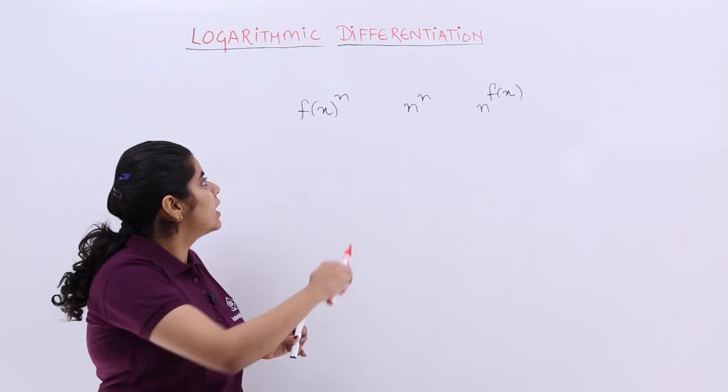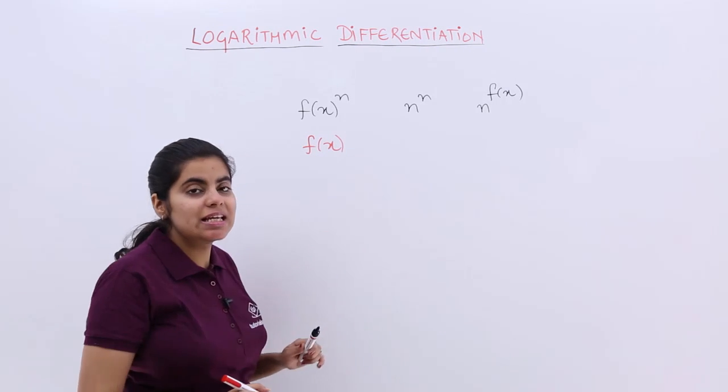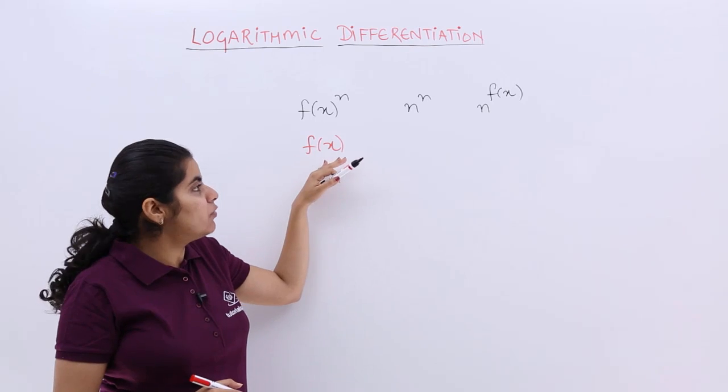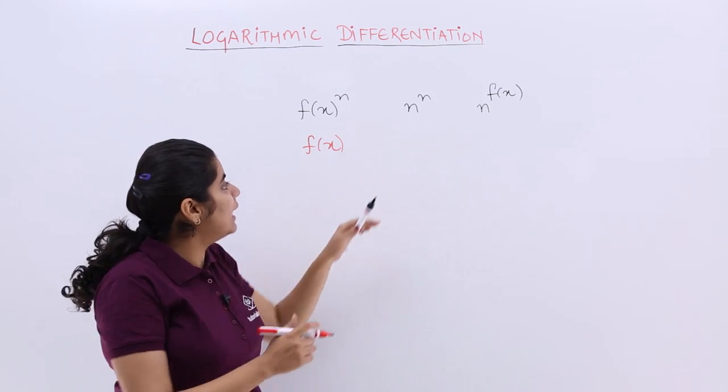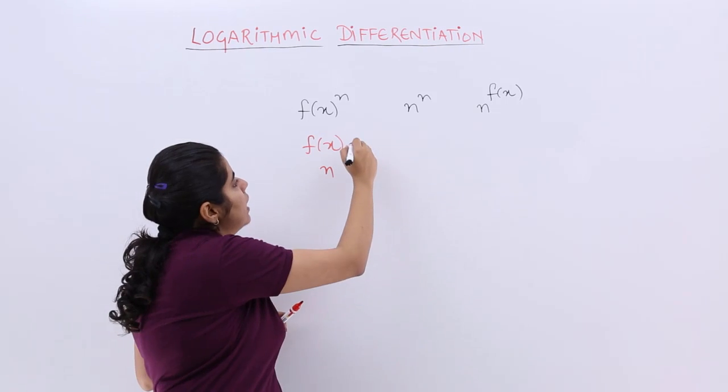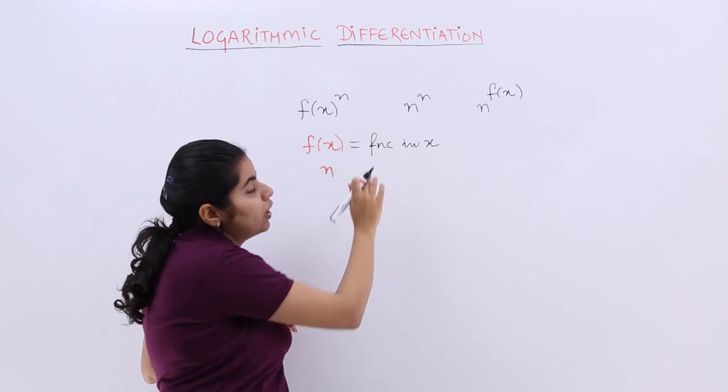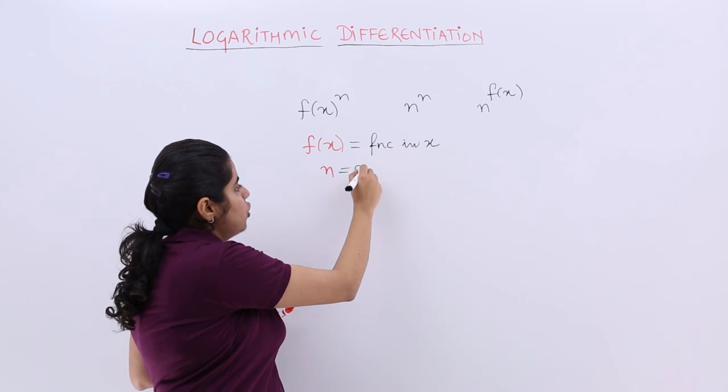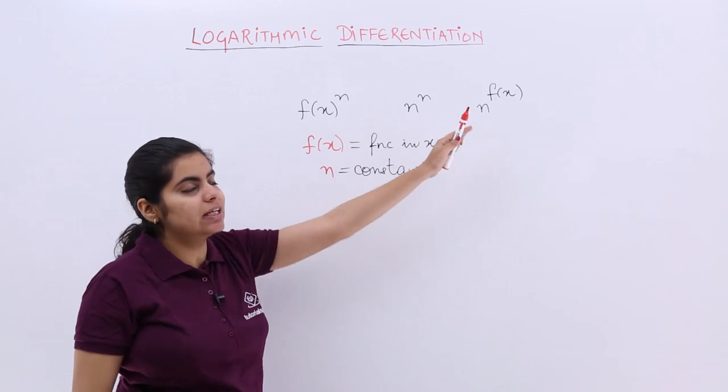That means if I have a function wherein f(x) is a function in x and n is a constant. I have written for short f(x) and n is a constant. We have seen how to differentiate these three categories of functions.